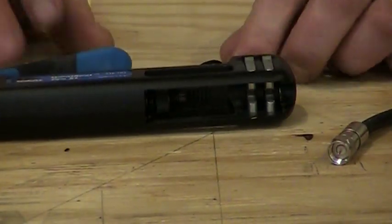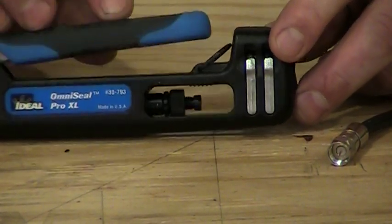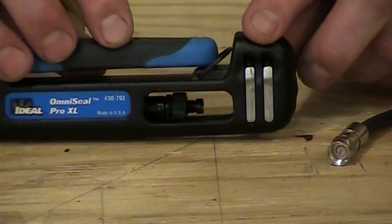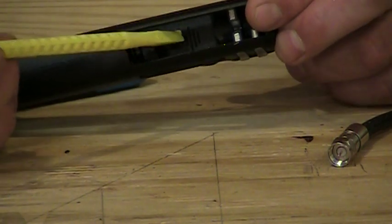Now, the compression tool, there's a variety of these out on the market, but all these tools have like a little ram that moves in and out as the lever gets pushed down. And inside the tool, there are some markings inside of here.